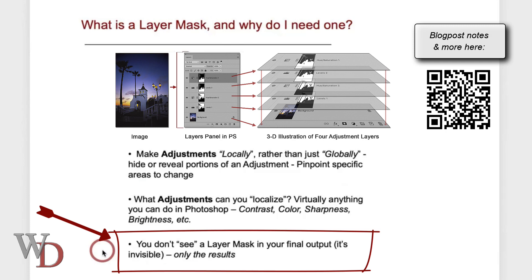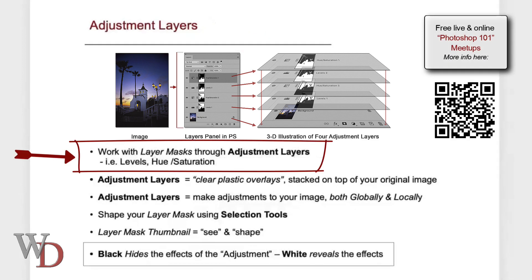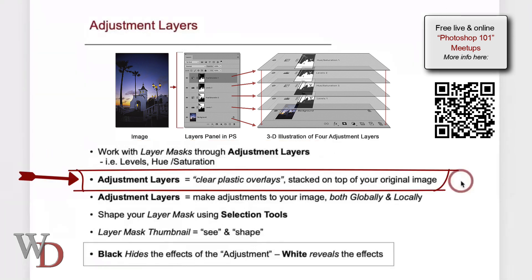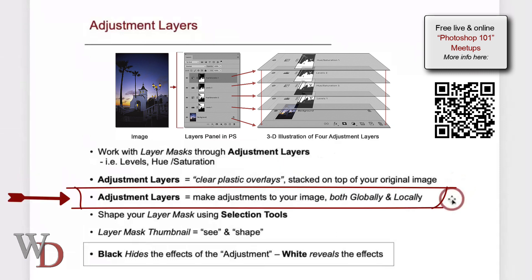You do not see a layer mask in your final output — it's invisible. You're only going to see the results. You work with layer masks through adjustment layers. You can think of adjustment layers as a clear plastic overlay stacked on top of your original image, and they make adjustments to your image both globally and locally.